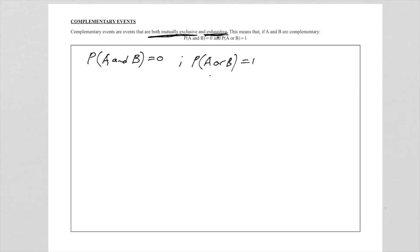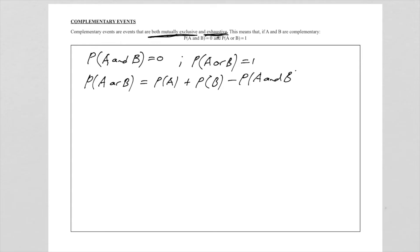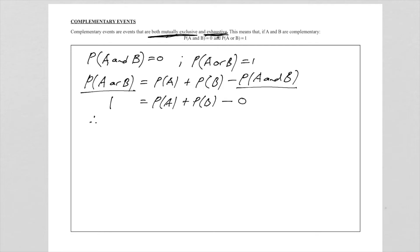Let's write down the general rule again. The probability of A or B equals the probability of A plus the probability of B minus the probability of A and B. If the two events are complementary, the OR is 1, and the AND is 0 because they are mutually exclusive. So we now get: the probability of A plus the probability of B equals 1.